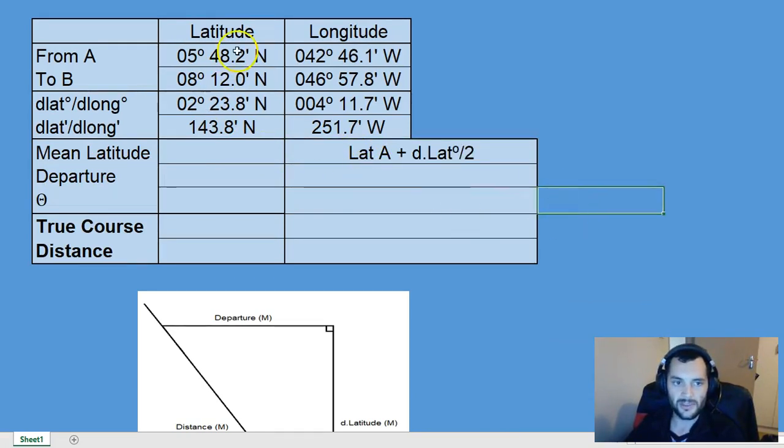To find mean latitude, we take latitude A plus half of the change in latitude. That will give us a point midway between A and B. We take latitude A, 5 degrees 48.2 minutes, and add half of the d latitude, which is 1 degree 11.9. That gives us a mean latitude of 7 degrees 0.1 minutes north.